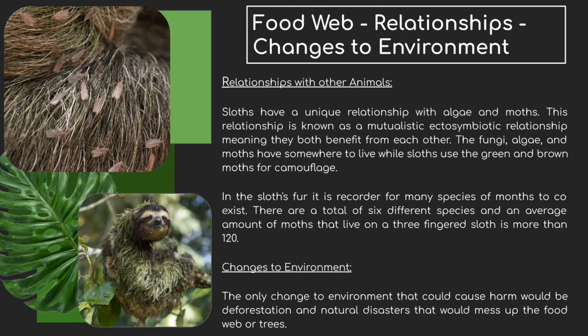Sloths have a really unique relationship with algae and moths. These moths are known as sloth moths because they live on sloths. This relationship is known as a mutualistic, ecto-symbiotic relationship, meaning that they both benefit from each other. The fungi, algae, and moths have somewhere to live, while the sloth uses the green and brown color of these moths and algae to camouflage. As we can see in the picture, the sloth's fur is a little bit green, so it can hide better in trees. Predators that focus on their eyesight are not going to be really able to spot the sloth because it's so camouflaged into the trees.